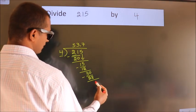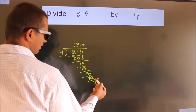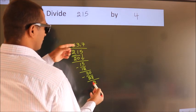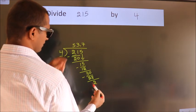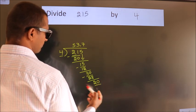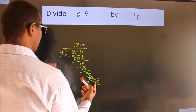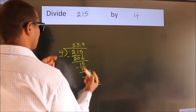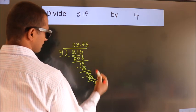After this, we already have the decimal, so directly take zero. So 20. When do we get 20 in the 4 table? 4 fives, 20.